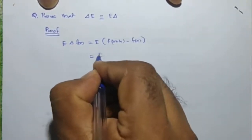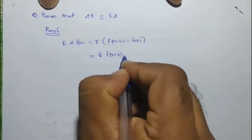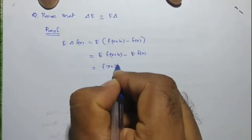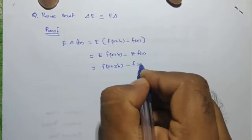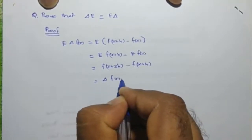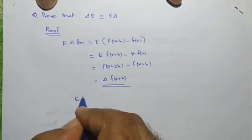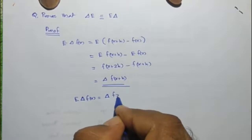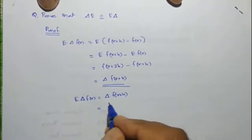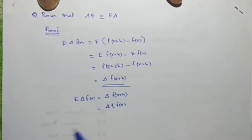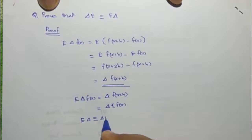This is equal to E f of x plus h minus E f of x, which equals f of x plus 2h minus f of x plus h. This is nothing but delta f of x plus h, or E delta f of x equals delta f of x plus h, which equals delta into E f of x. So we may write E delta is equivalent to delta E.